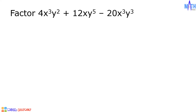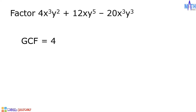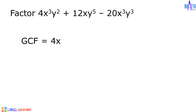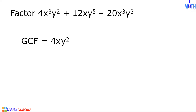Last example, let us factor 4x cubed y squared plus 12xy raised to 5 minus 20x cubed y cubed. Let us find the GCF. Between 4, 12, and negative 20, the GCF is equal to 4. Between x cubed, x, and x cubed, the GCF is equal to x. Between y squared, y raised to 5, and y cubed, the GCF is y squared.